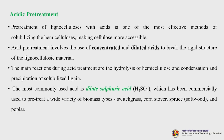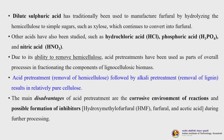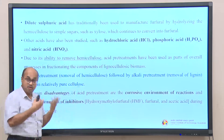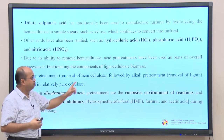There are hundreds of excellent research papers available on dilute acid pretreatment of lignocellulose biomass. Dilute sulfuric acid has traditionally been used to manufacture furfural by hydrolyzing hemicellulose to simple sugars such as xylose, which continues to convert into furfural. Other acids studied include hydrochloric acid, phosphoric acid and nitric acid. Due to its ability to remove hemicellulose, acid pretreatment has been used as part of overall processes in fractionating lignocellulose components. Acid pretreatment followed by alkali pretreatment results in relatively pure cellulose.